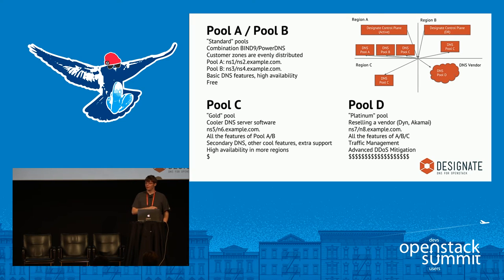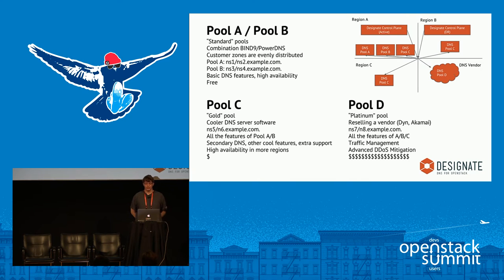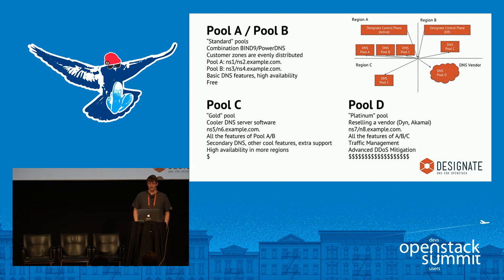Customer zones would be evenly distributed across pools A and B as a standard or free option — maybe for a mom-and-pop running their WordPress site. For the next level you might have a gold-type pool, perhaps running NSD, with different NS records, running in more regions. You might offer advanced features like secondary DNS and charge a little more — this is how anyone running a real DNS service would do it, across as many regions as possible.